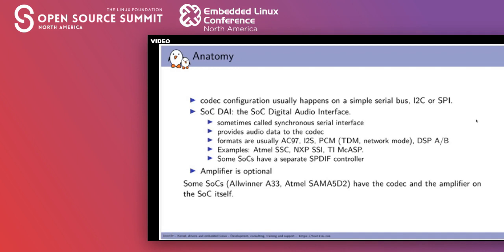The amplifier is totally optional — you can have line in or line out connections. Some SoCs like the Atmel SAME5D2 will have the codec and the amplifier directly on the SoC, which will typically be a class D amplifier.